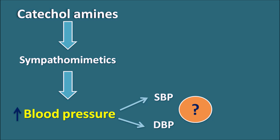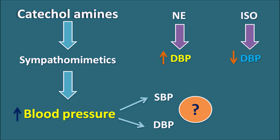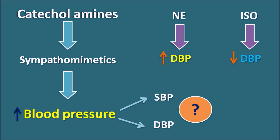For example, norepinephrine increases diastolic blood pressure slightly, whereas isoproterenol decreases diastolic blood pressure very significantly. Even though both norepinephrine and isoproterenol are catecholamines, they have quite opposite effects on diastolic blood pressure. In this video, we will see how these catecholamines affect both systolic and diastolic blood pressures.